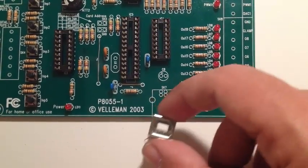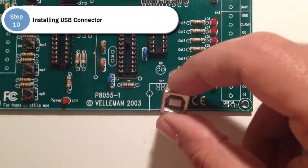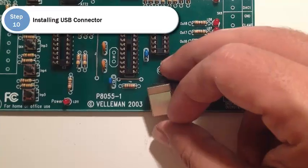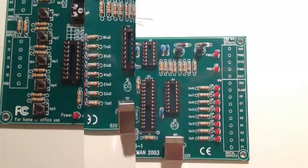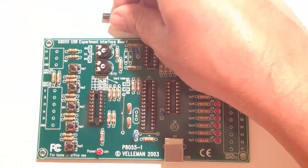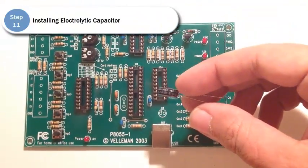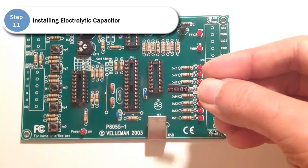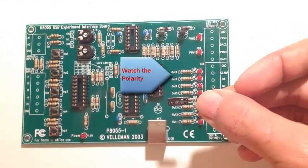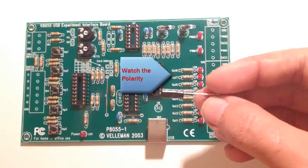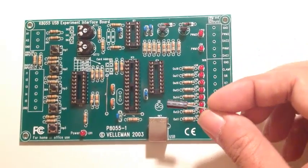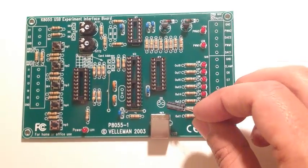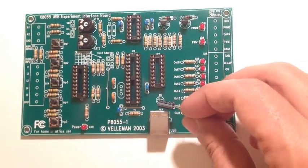Step 10, installing the USB connector right there on the board, so you can connect the USB cable to the computer. And for step 11, we'll be installing the 4.7 microfarad capacitor. And it goes right there. And always remember to watch the polarity. It's marked with a negative to show you which one's negative, so you'll know the negative is on the opposite side of the positive there.